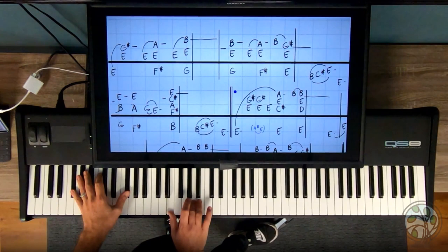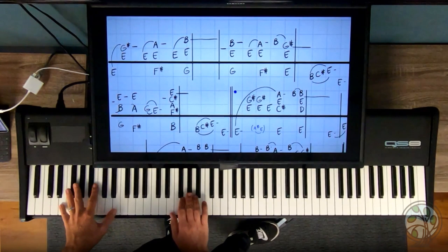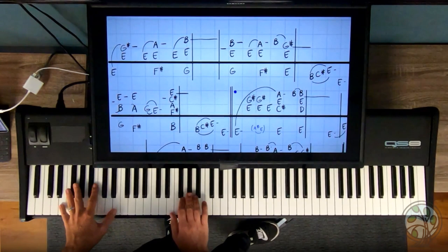Then we're going to have E, A. While the left hand moves to F sharp octave. So the rhythm is one, and bum, bum. Again, one, and bum, bum. Then an E again.